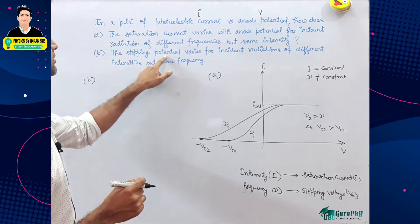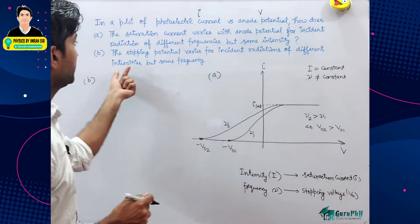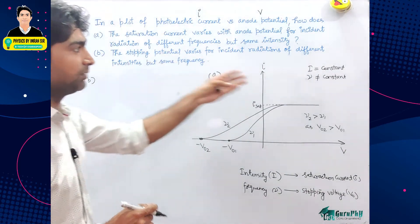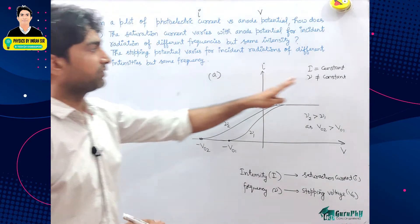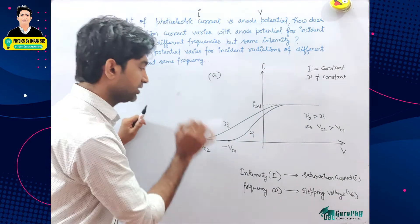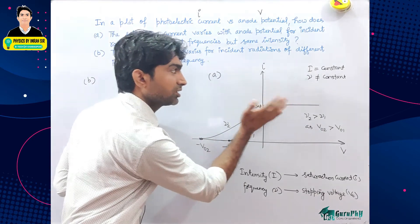B part: stopping voltage potential varies for incident radiations of different intensities but same frequency. Opposite - intensity different, frequency same. Frequency same, potential stopping voltage same, and saturation current change.